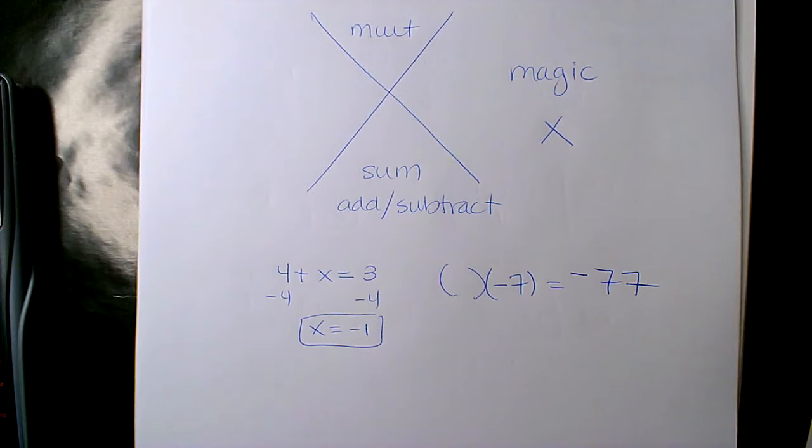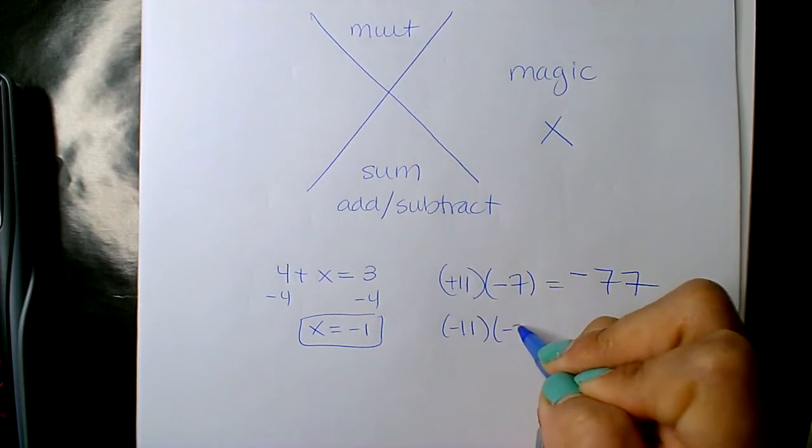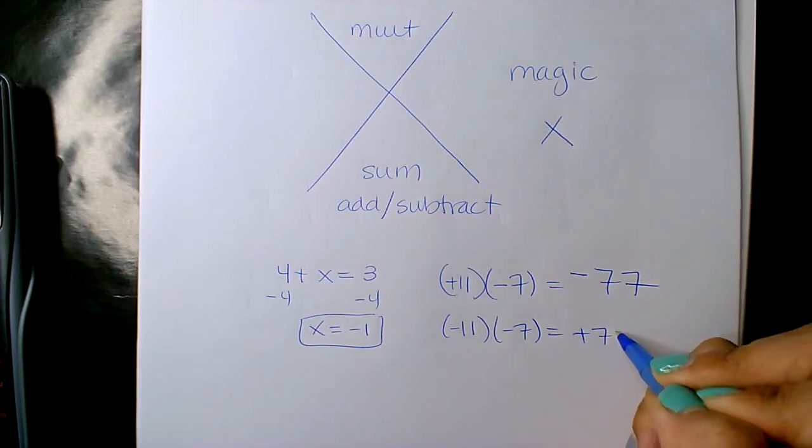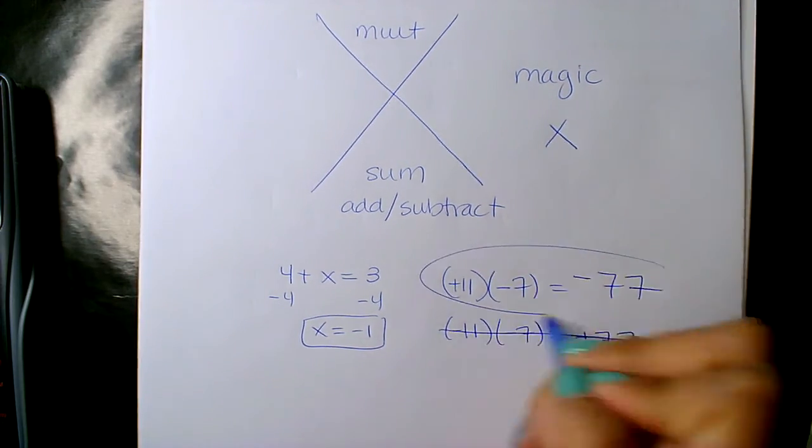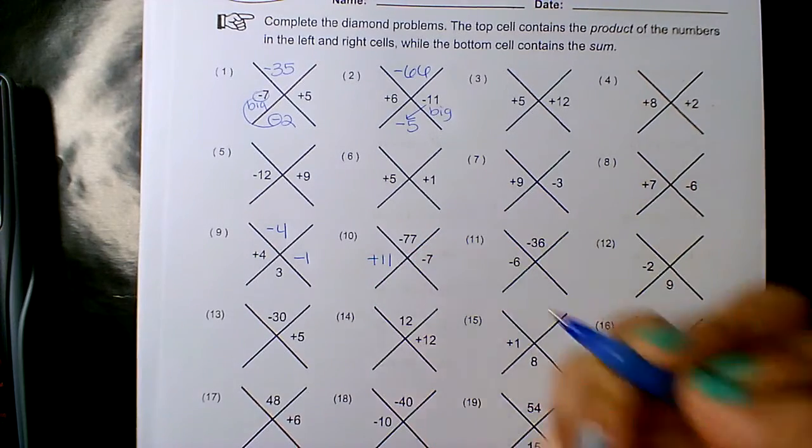Remember, a positive times a negative gives you a negative. Yeah, 11 or positive 11, right? Because if you gave me negative 11 with negative 7, that would give me positive 77. I don't have that. I have negative 77. So positive 11.